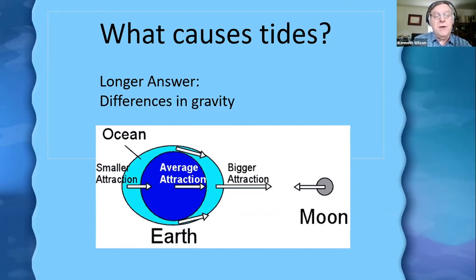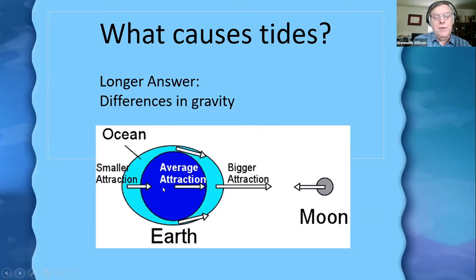So basically what we have is a difference in the strength of gravity of the Moon depending on where you are on the Earth. Because of this, the oceans above the surface of the Earth, since they're fluid, can expand a bit, can go further out because of the gravitational pull of the Moon. So we have this bulge in the oceans on the side facing the Moon. At the same time, the Earth is also being pulled towards the Moon, so the Earth on the other side is being pulled away from the water. The result of this difference in gravity causes the water to bulge out on two sides: the side facing the Moon and the side opposite.